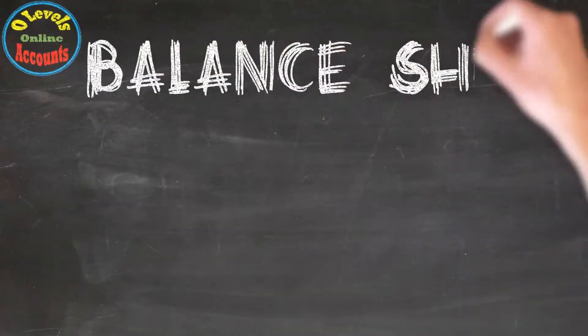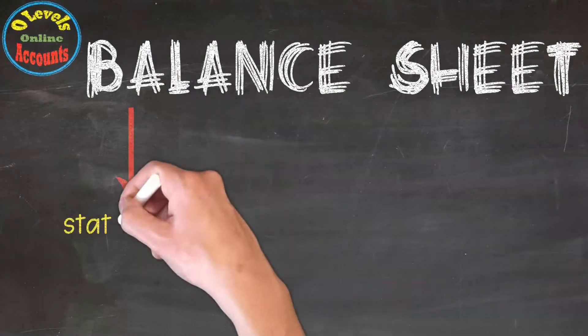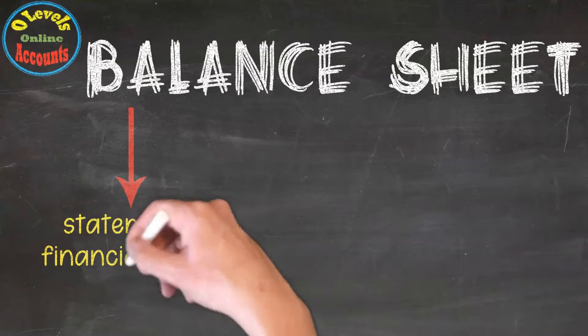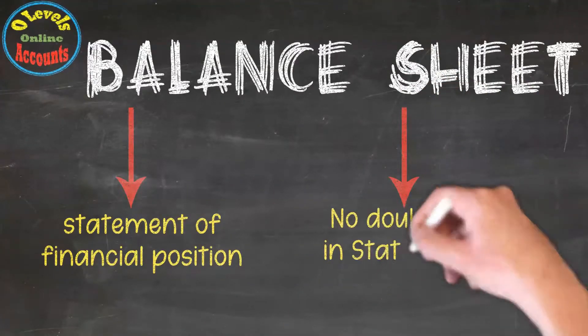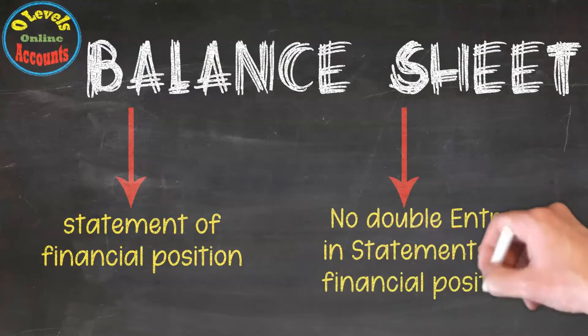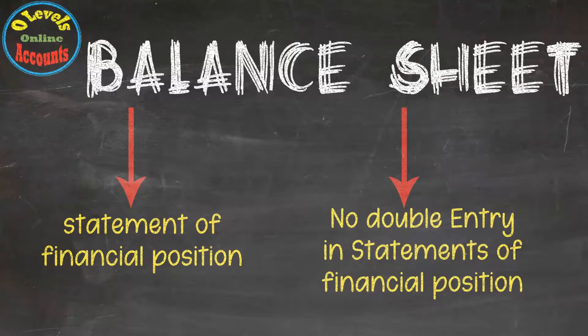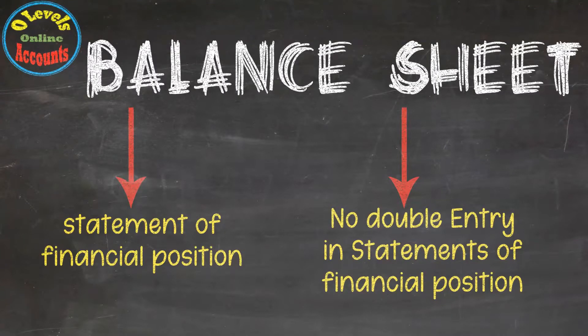The balance sheet is also called the statement of financial position, and it has no double entry system. This means the statement of financial position or balance sheet does not require any double entry, like the trading and profit and loss account.